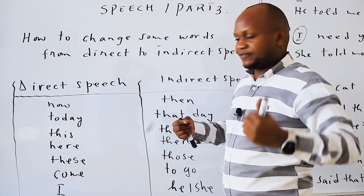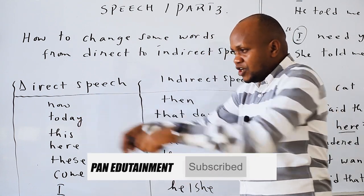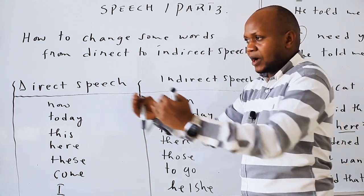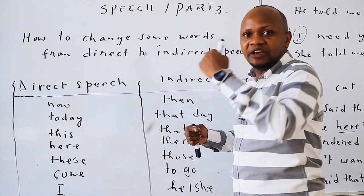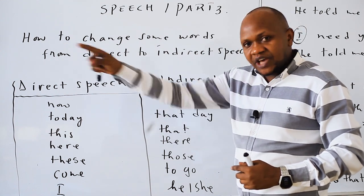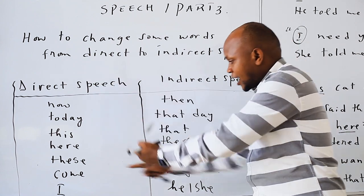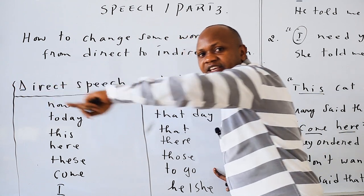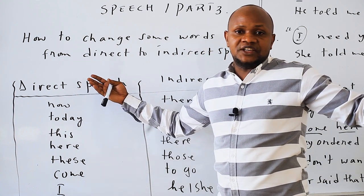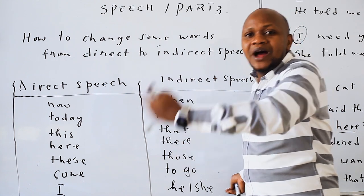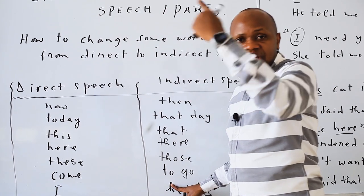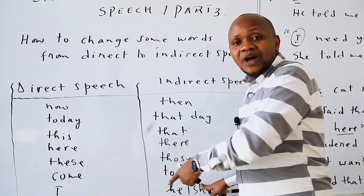Here changes to 'there'. 'He commanded me' — he ordered me to go there. 'Come here' becomes 'He ordered me to go there.' 'I want food' — he said that he wanted food. She said that she wanted food.